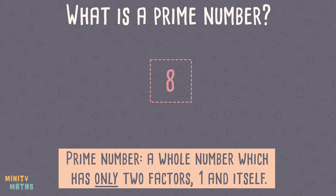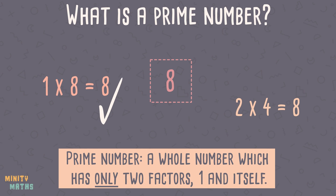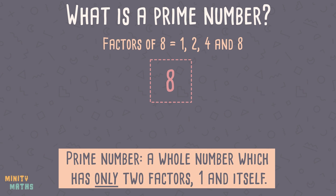8 is not a prime number because we can multiply 1 by 8, and 2 by 4. 8 has 4 factors, so is therefore not a prime number. Numbers with more than 2 factors are called composite numbers.